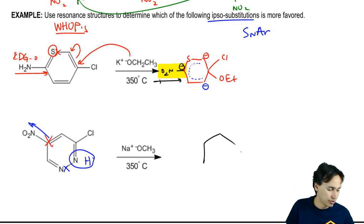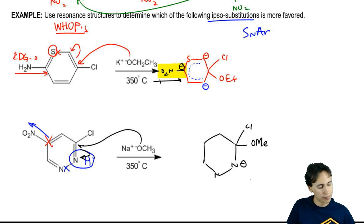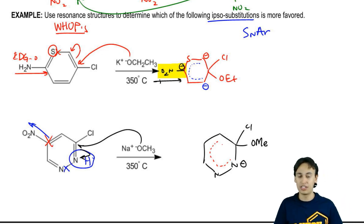On this one, let me skip the double bonds. What I get for a reaction is this attacks here. I move the electrons down here. I wind up getting a negative charge on that N. I have chlorine, I have OMe, methoxy.